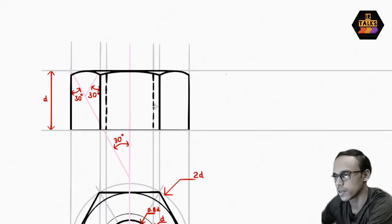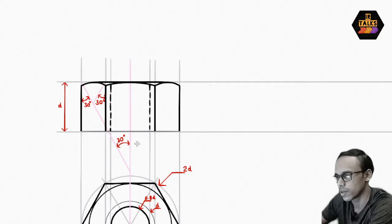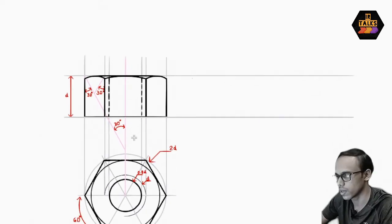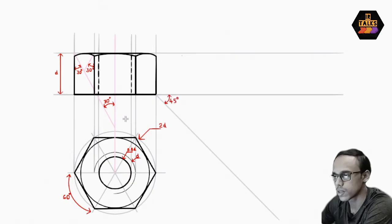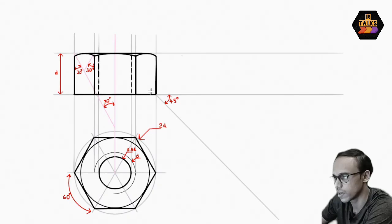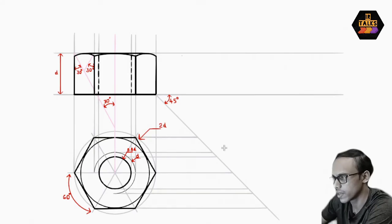We complete the front view, then move to the side view. For the side view, we use the projection method with a 45-degree line. We set the front view limits, then the side view limits — placing the left and right limits using the 45-degree line.